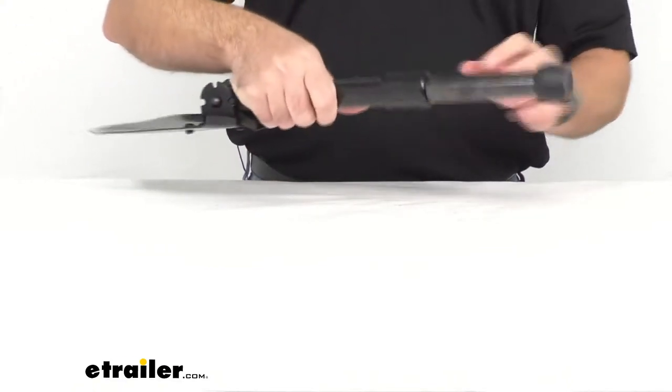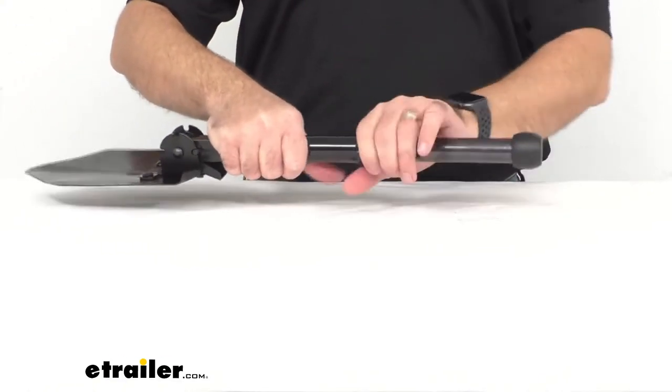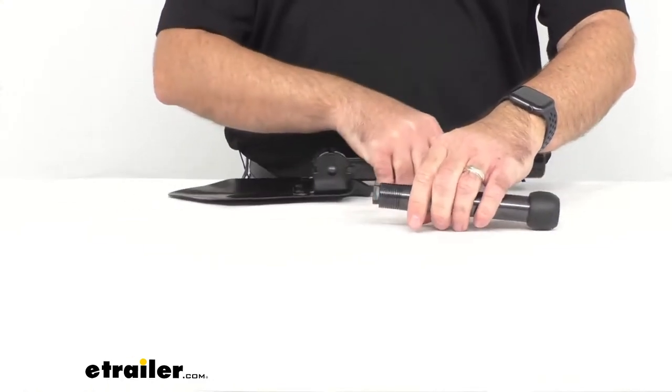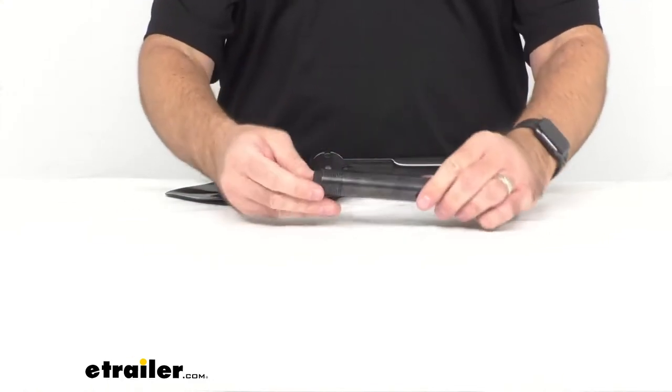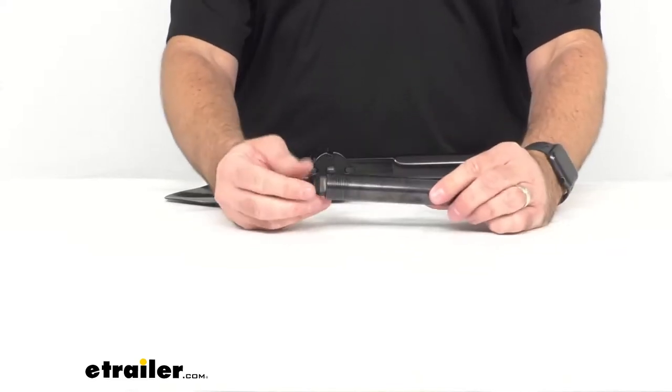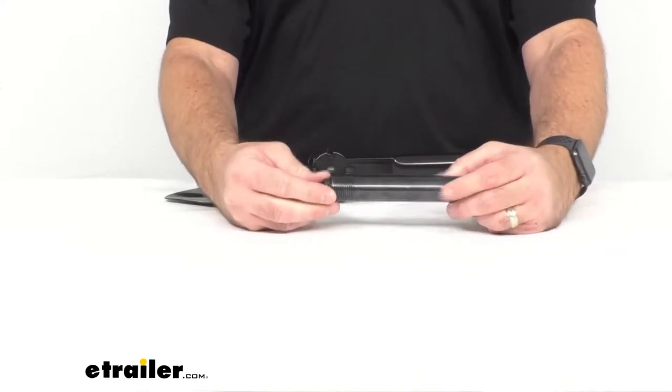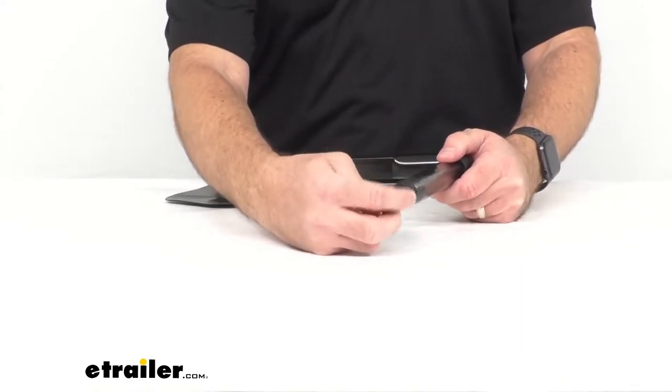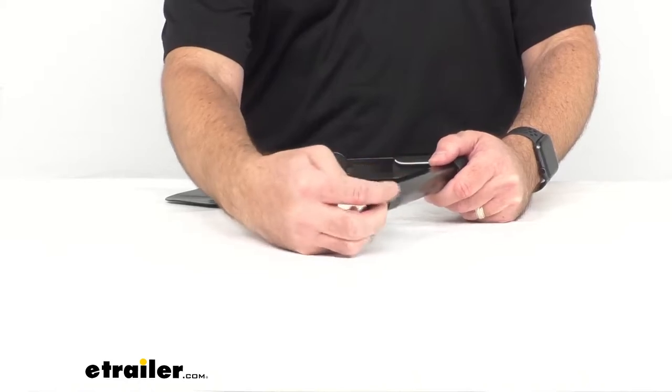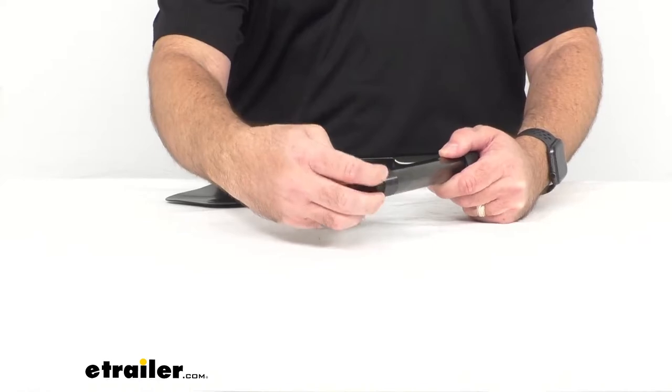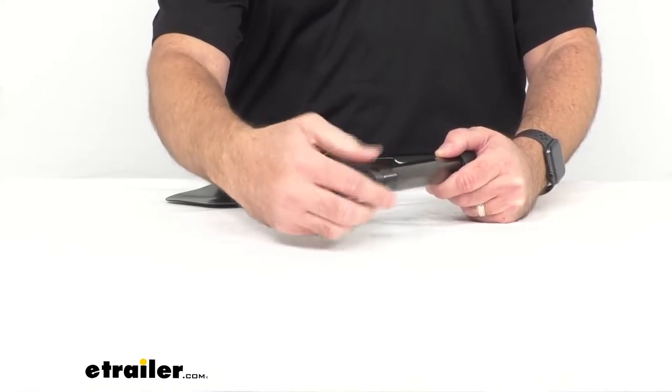Now what makes this unique is the handle does store a saw blade. So let me show you how you get to that. This is going to be the handle that I have taken out. And you just give this knob here a twist and that is going to provide a saw blade that is 5 1⁄2 inches long.